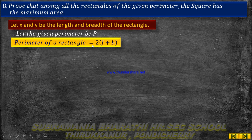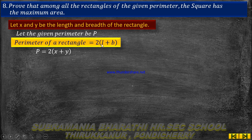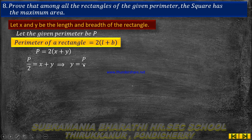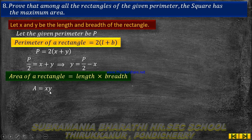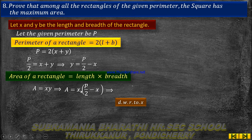Perimeter of the rectangle: 2(x + y) = P, so y = P/2 - x. The area of the rectangle is A = x × y, substituting: A = x(P/2 - x), which gives A = (P/2)x - x².